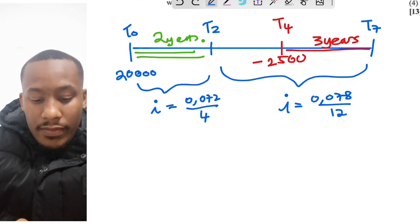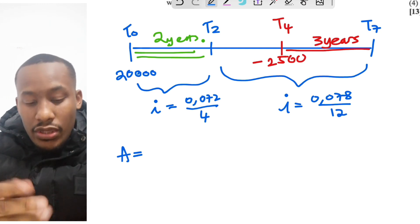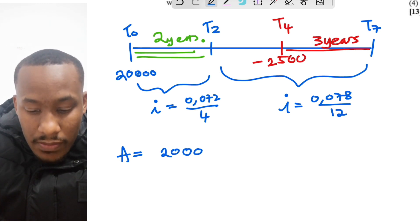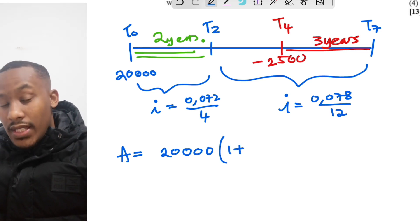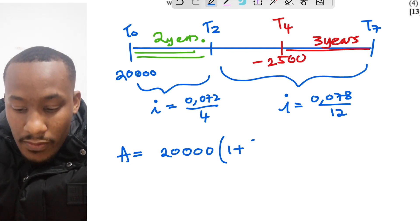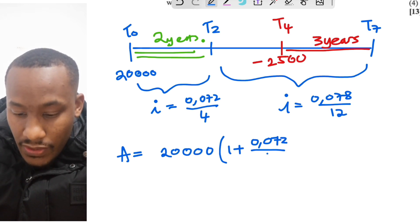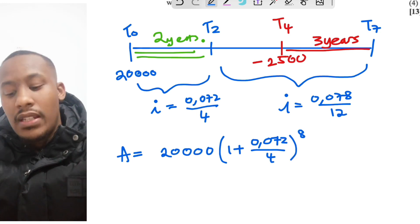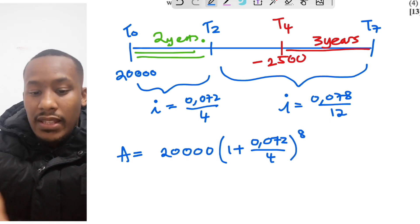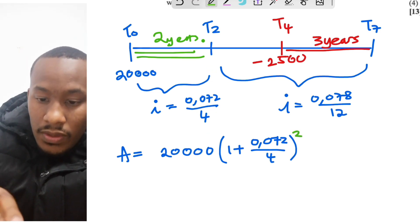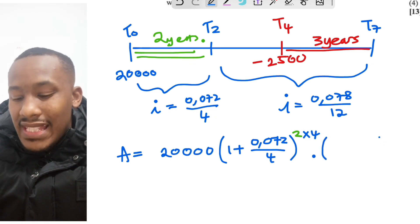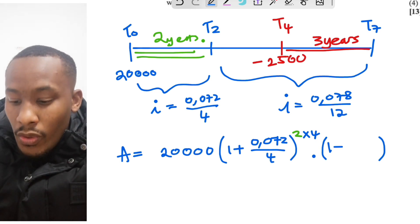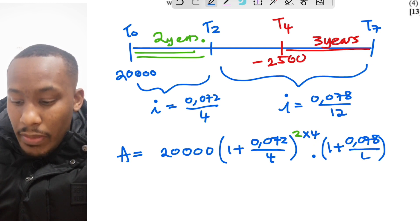You can work it out this way. The investment is going to be, let's start with the 20,000. So we take the 20,000, and the 20,000 is in the bank for a total of seven years. It's there from the initial deposit, so it's in the bank for a total of seven years. So let's first do the first interest rate, which was 1 plus 0.072 divided by 4. That's there for two years. Remember that's 2 times 4, that's how we get the 8. In fact, I'm going to write it as such, I'll say 2 times 4.